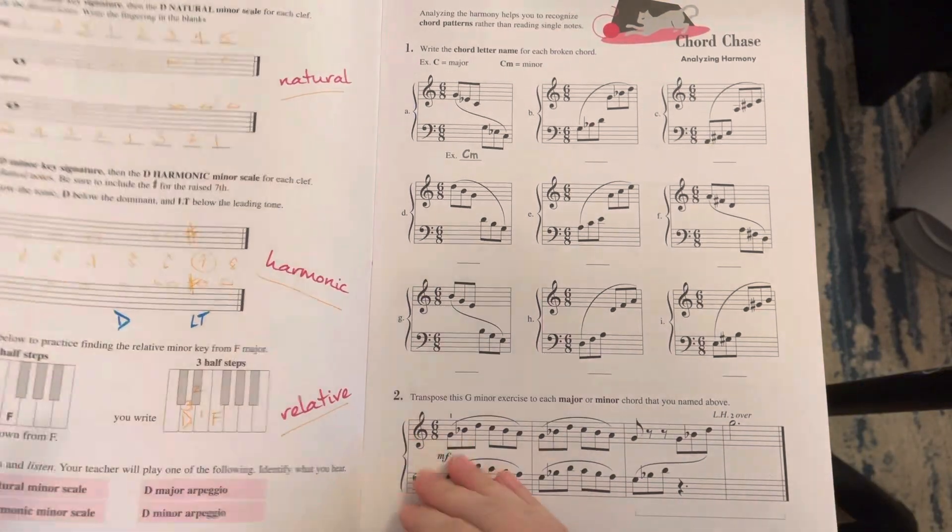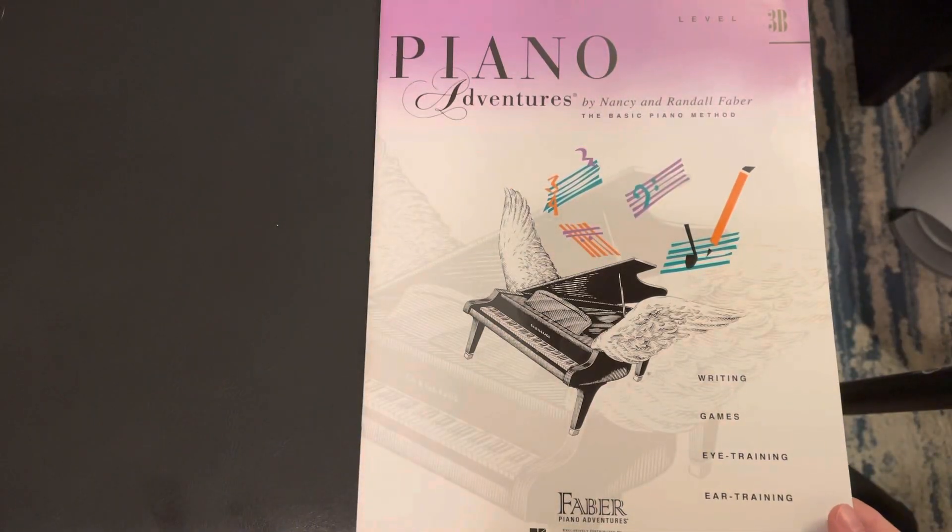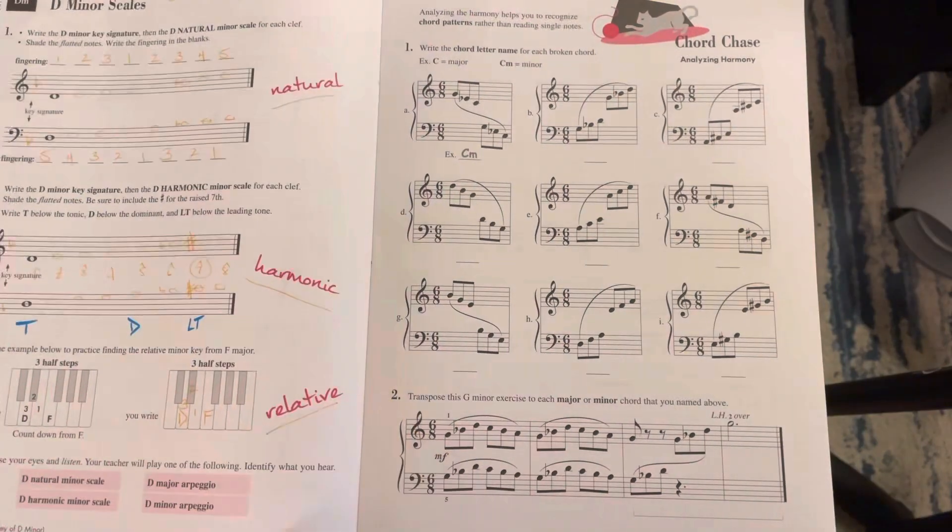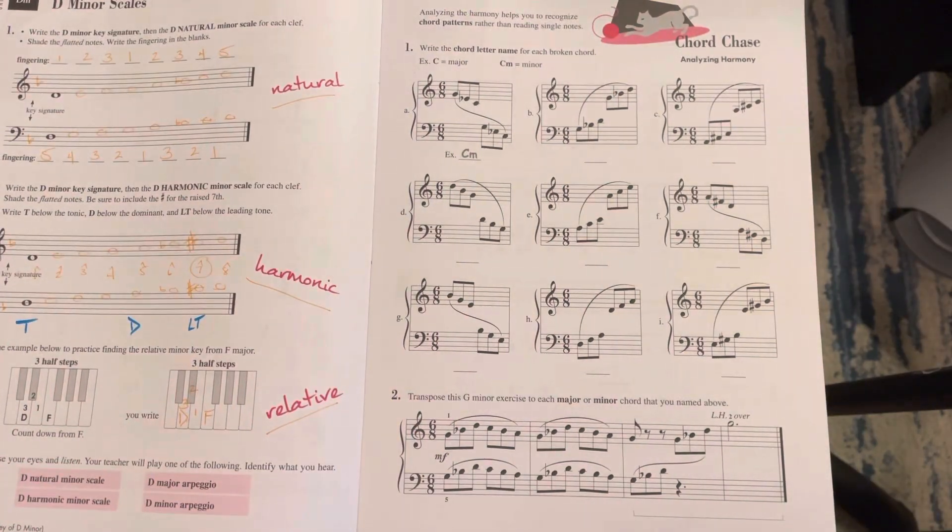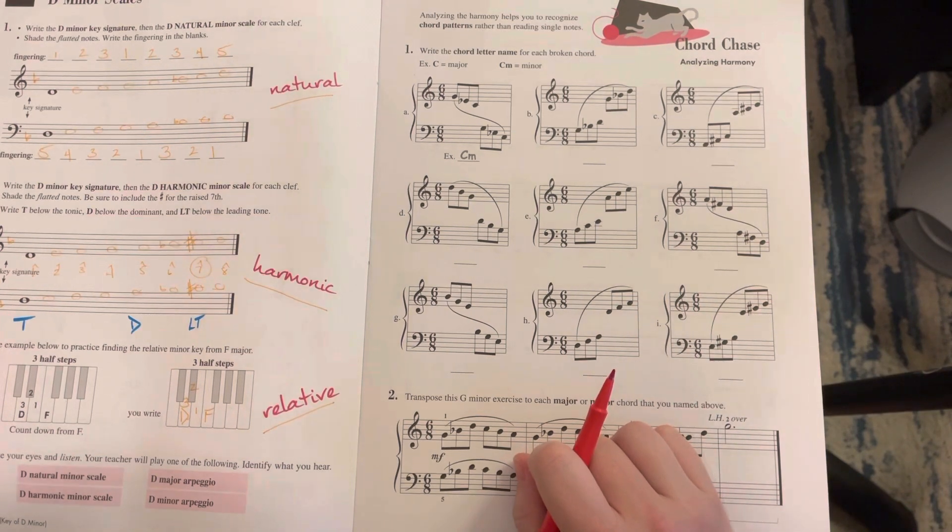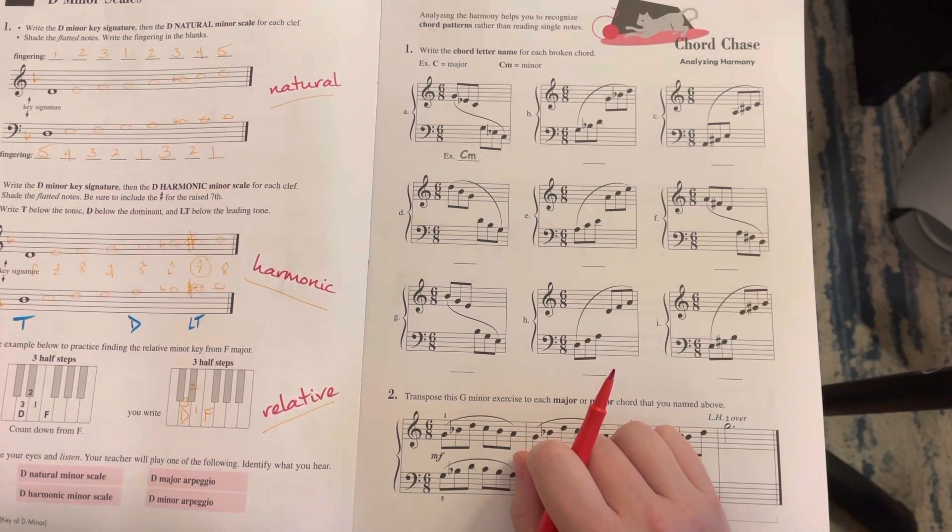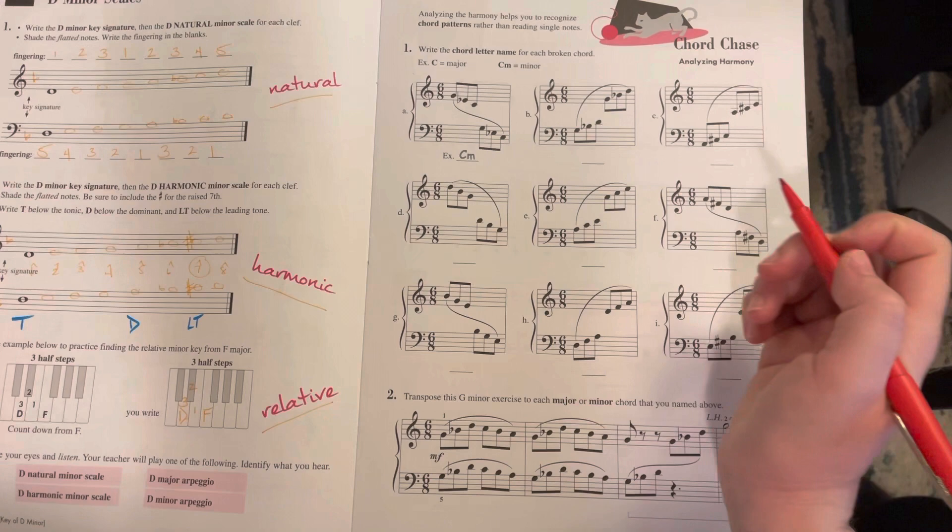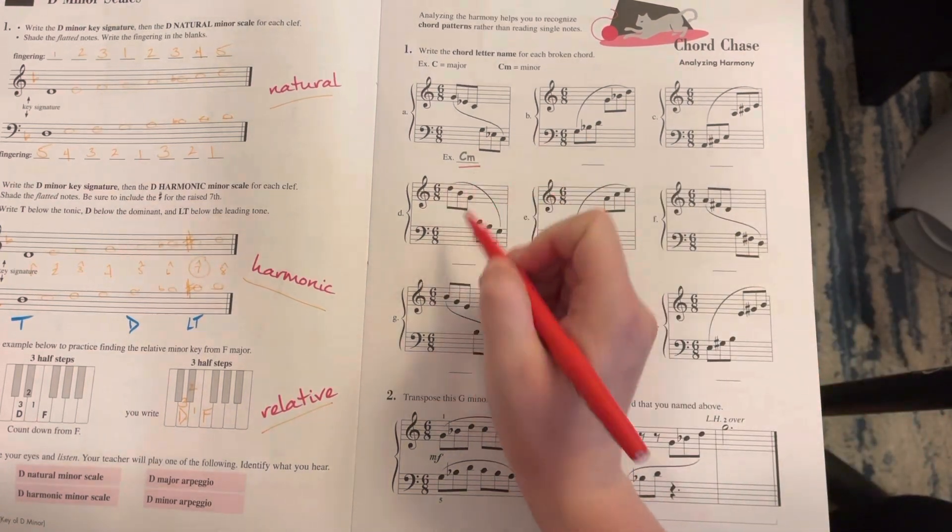Page 11, Chord Chase from Piano Adventures Theory Book 3B. We're just looking at these broken chords and identifying what the chord is, major or minor. So the first one, they say C minor.